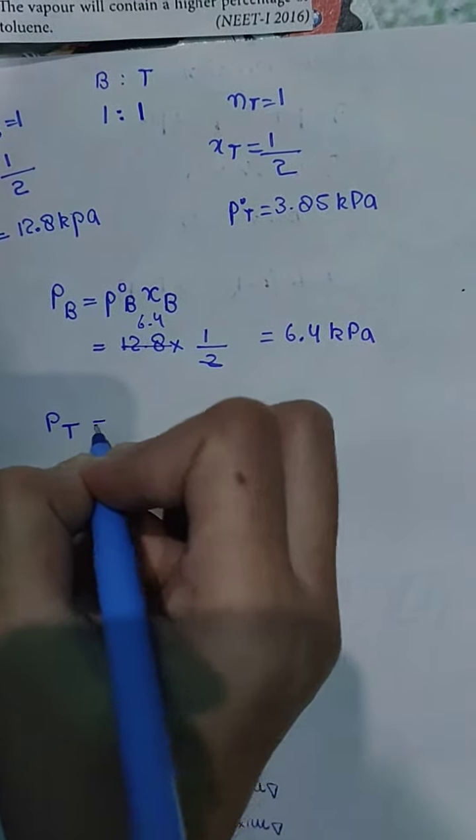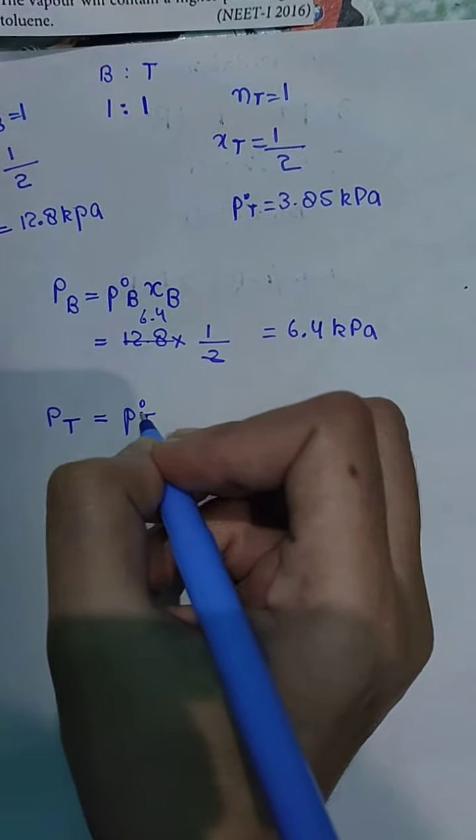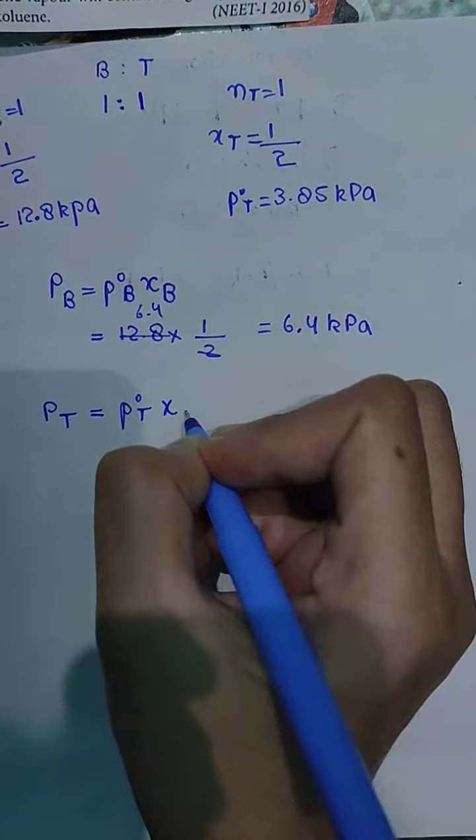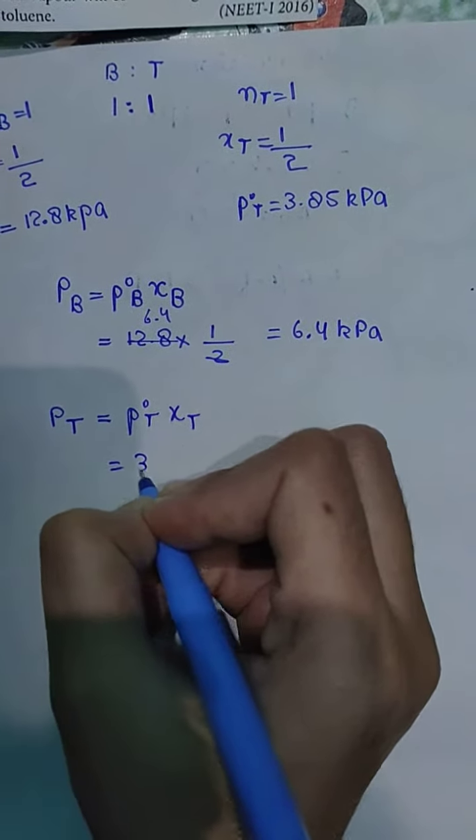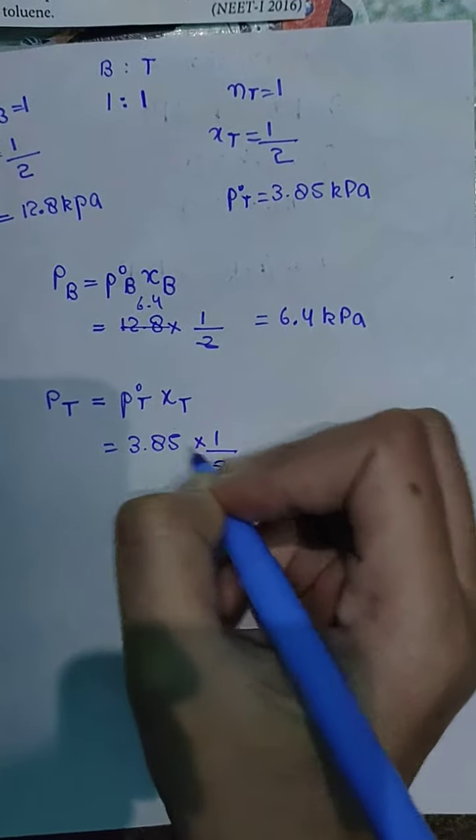Next, partial pressure of toluene. This will be equal to vapor pressure of pure component toluene into mole fraction of toluene. Pure is 3.85 multiply it by mole fraction 1 upon 2.